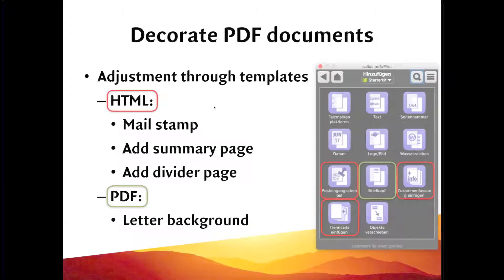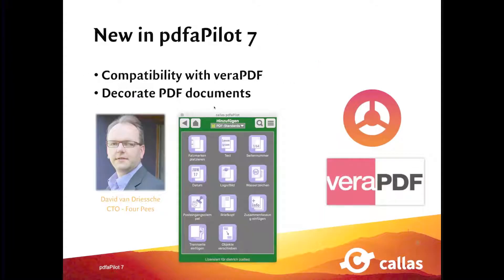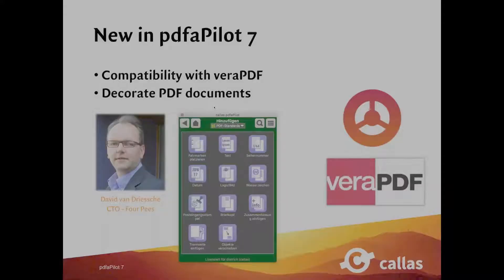Going back to the overview, we've covered most of these features. They can be modified using either an HTML template or simply by making a PDF file. For letter background, it was a PDF file. For mail stamp, summary page, and divider page, the modification is via an HTML template. You can duplicate one of the example templates and simply modify what it does, making it versatile — you can have your own company-branded templates added to your documents.